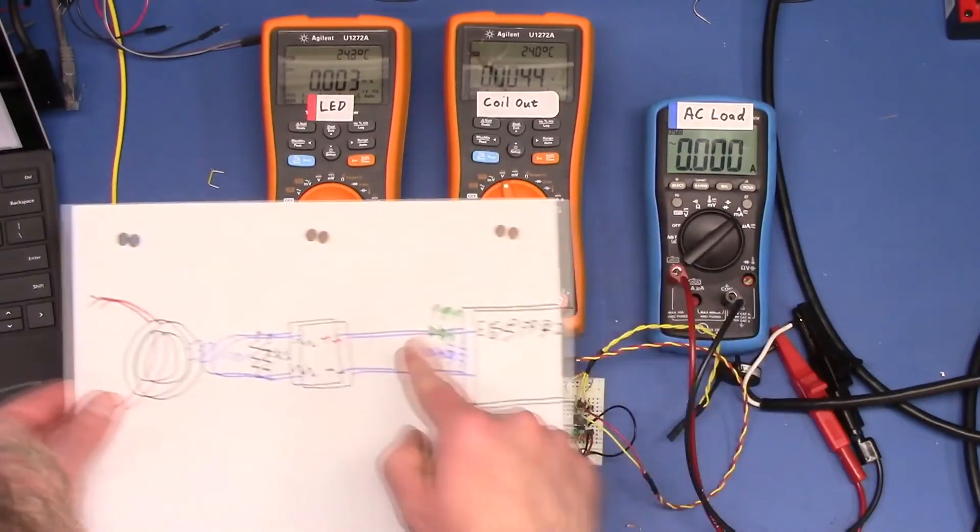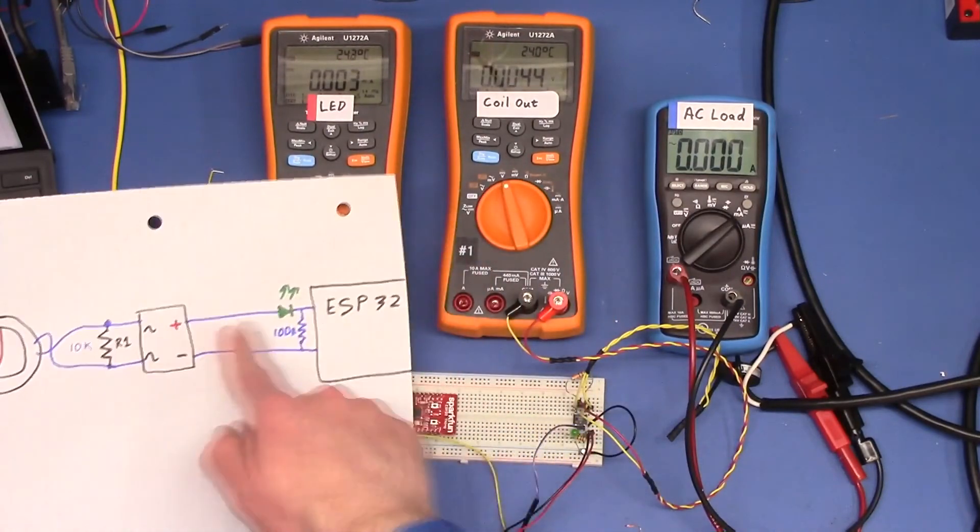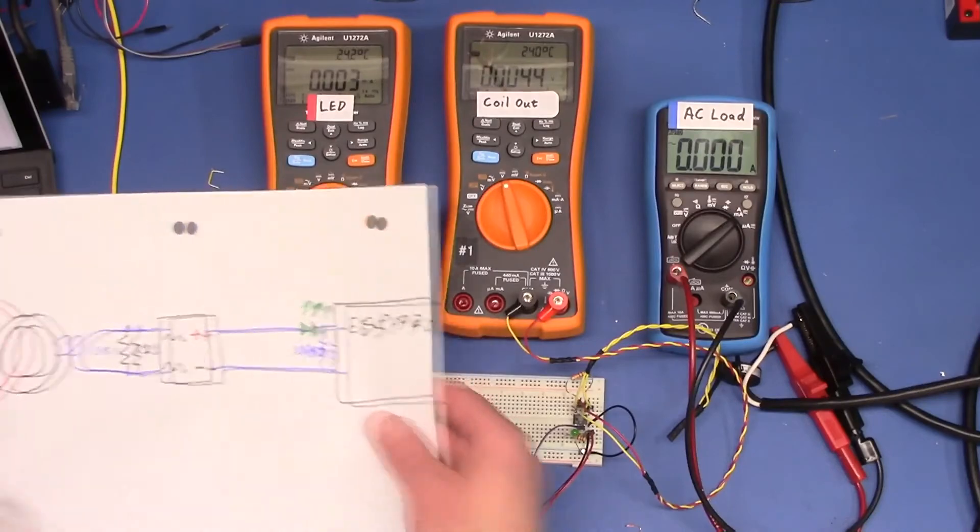We're going to keep an eye on that. And that'll be the voltage under load. And then this will be the current going through the LED. And we can see what kind of power we're getting.